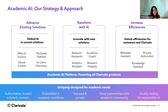Our second pillar is about transforming with Gen AI, via the creation of new services and tools that we couldn't build before. Take for example Academic Coach from Alethea, which supports student content engagement. Alethea is flipping the common use of tools such as ChatGPT — instead of the user asking the chatbot questions, it is the chatbot asking questions of the student and guiding them through the reading process. Our third pillar is about increasing efficiencies, both for customers and our own back-end processes. A good example is using Gen AI to enrich metadata consistently and at scale.